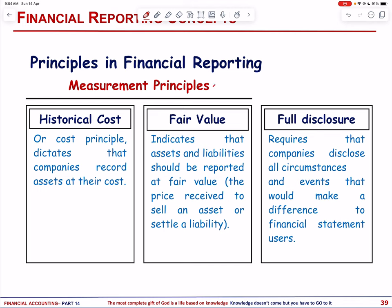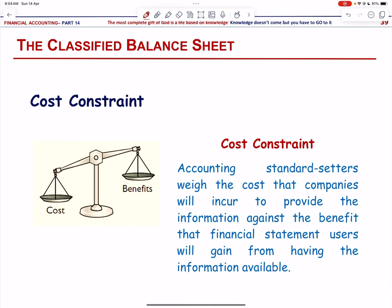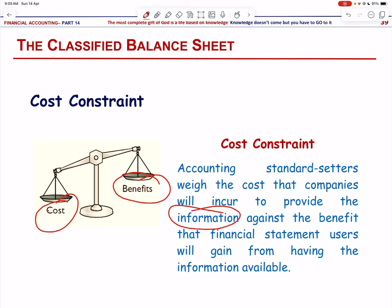Principles of financial reporting include: the measurement principle, where assets are recorded at historical cost or fair value (fair value being the price received to sell an asset or settle a liability); full disclosure, requiring companies to disclose all circumstances and events that would make a difference to financial statement users; and the cost constraint, where accounting standards weigh the cost companies will incur to provide information against the benefits financial statement users will gain — if benefits are less than cost, that information is not necessary.